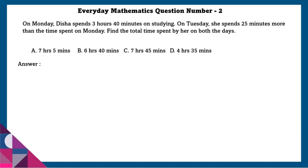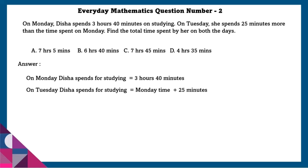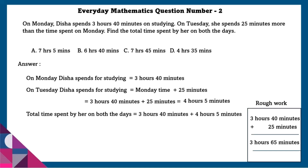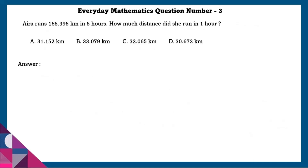Question 2: On Monday, Disha spends 3 hours 40 minutes on study. On Tuesday she spends 25 more minutes than she spent on Monday. Find the total time spent by her on both days. She studied for 3 hours 40 minutes plus 25 more minutes, that is 4 hours 5 minutes on Tuesday. Total time spent by her on both days is equal to 7 hours 45 minutes.